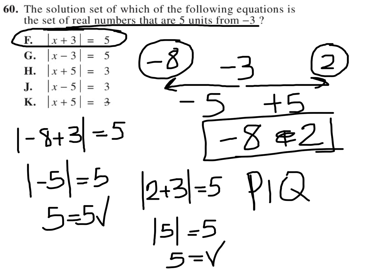If you have more time, you want to just check to make sure. You would see that in choice G, by plugging in negative eight, we'd get negative eleven. The absolute value of which would be positive eleven, so that's not five.